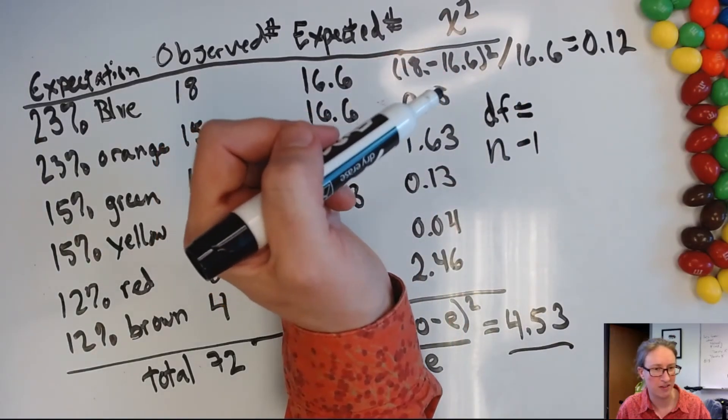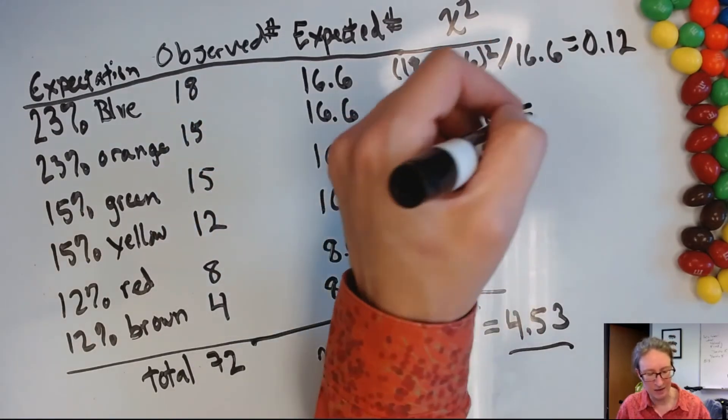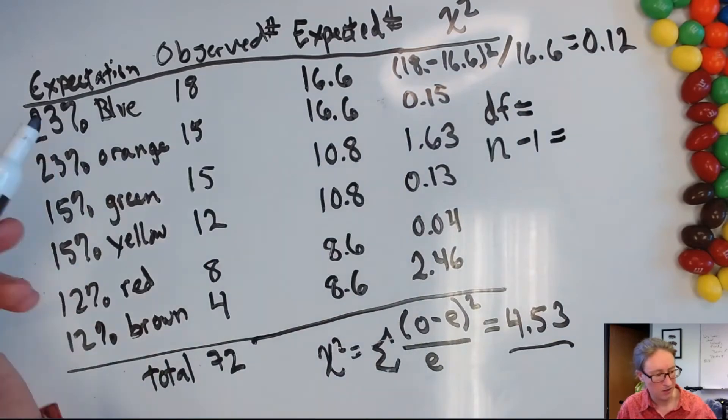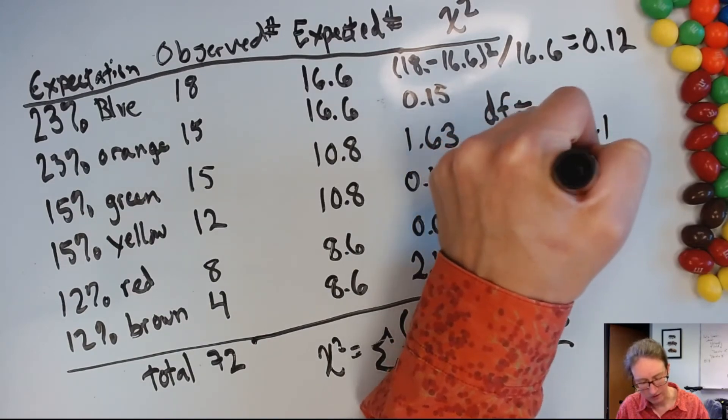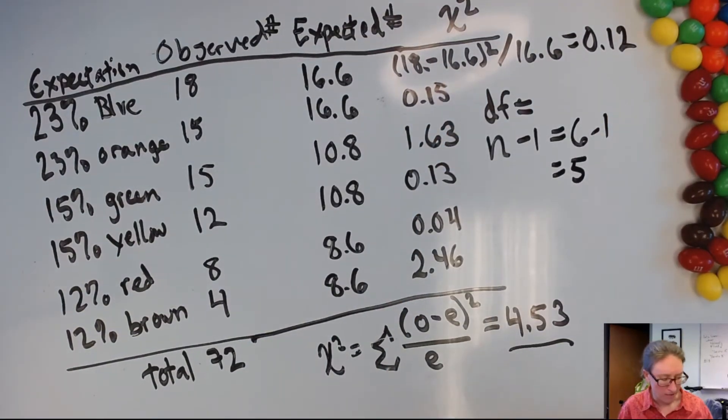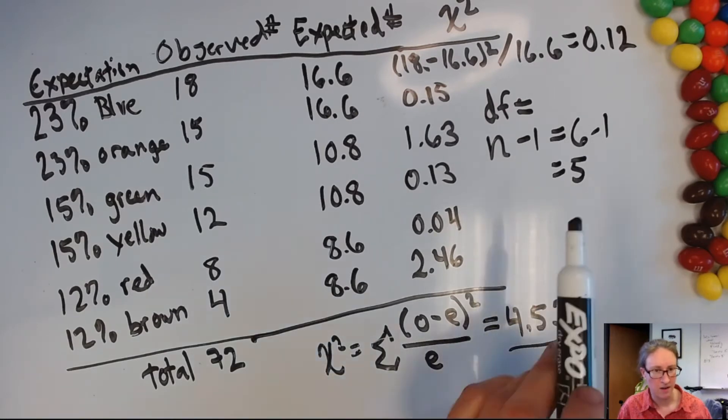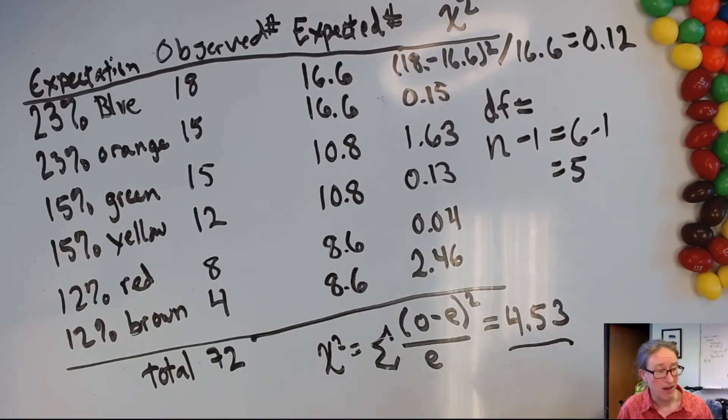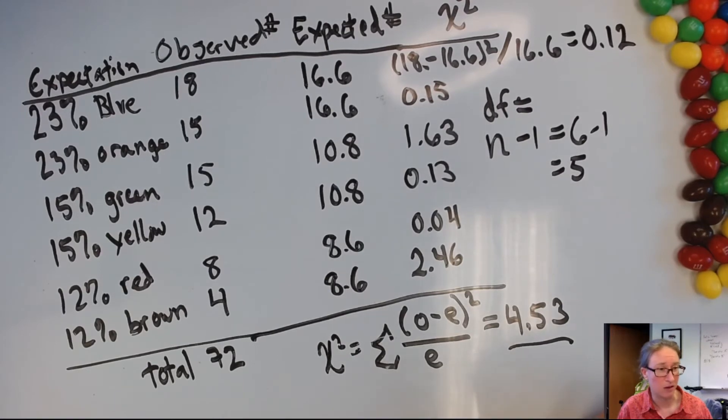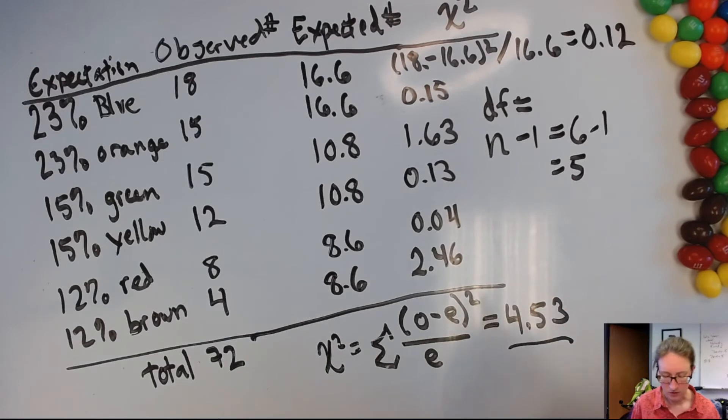And they refer to this measurement as the degrees of freedom. And we don't need to get too bogged down in why they call that the degrees of freedom right now. But it's n minus 1, or the number of categories minus 1. So here we've got 1, 2, 3, 4, 5, 6 categories. So our degrees of freedom are 5. Okay, so once we have our chi-squared statistic calculated, and we have our degrees of freedom, we can then compare this to a critical chi-squared value that is the value that tells us the probability of getting this outcome by chance. So let's look that up in a chi-squared statistic table.